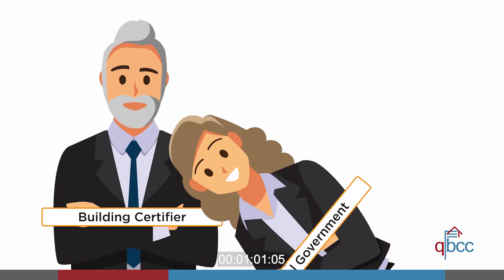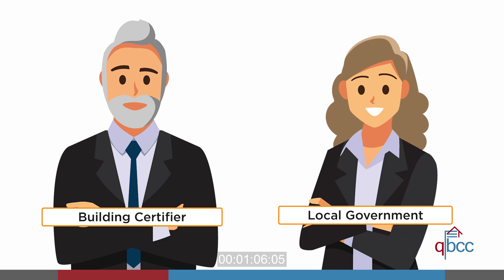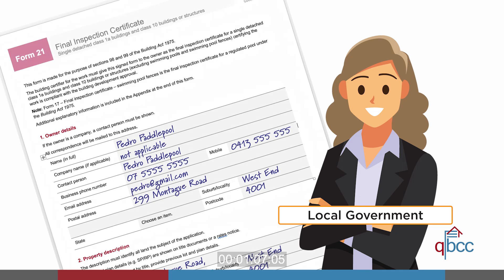Classification of buildings is the responsibility of building certifiers and local governments. You should attempt to obtain approval documents and the final certificate for the building from the homeowner, or encourage them to obtain approval documents and the final certificate from the local government.